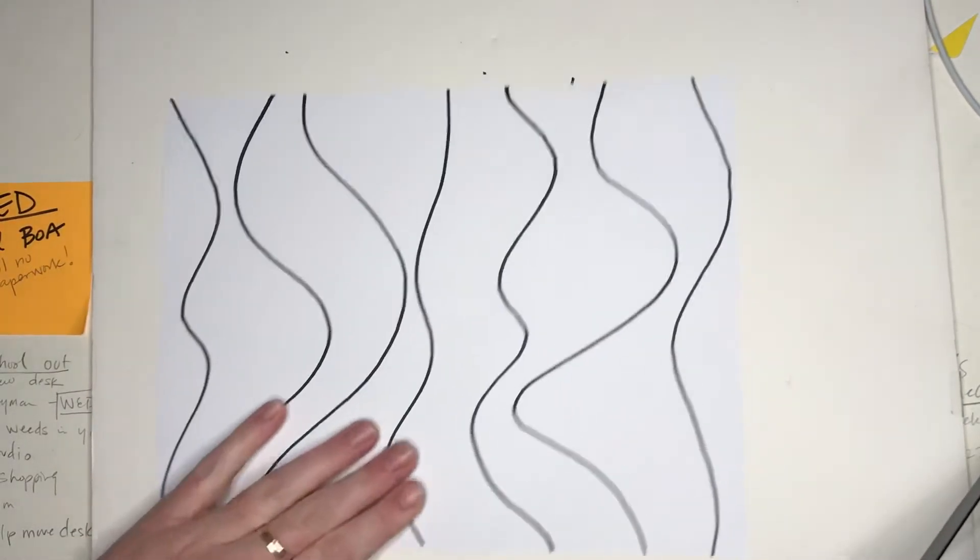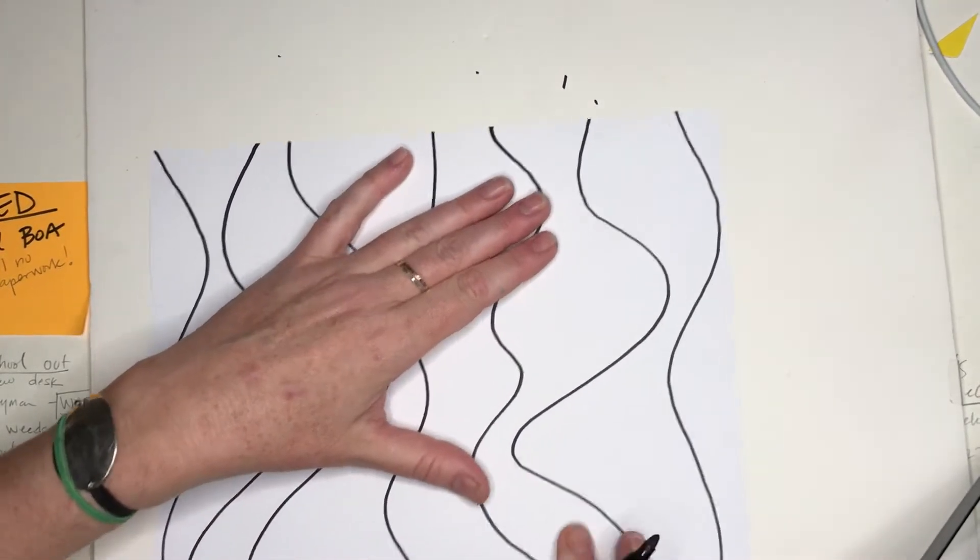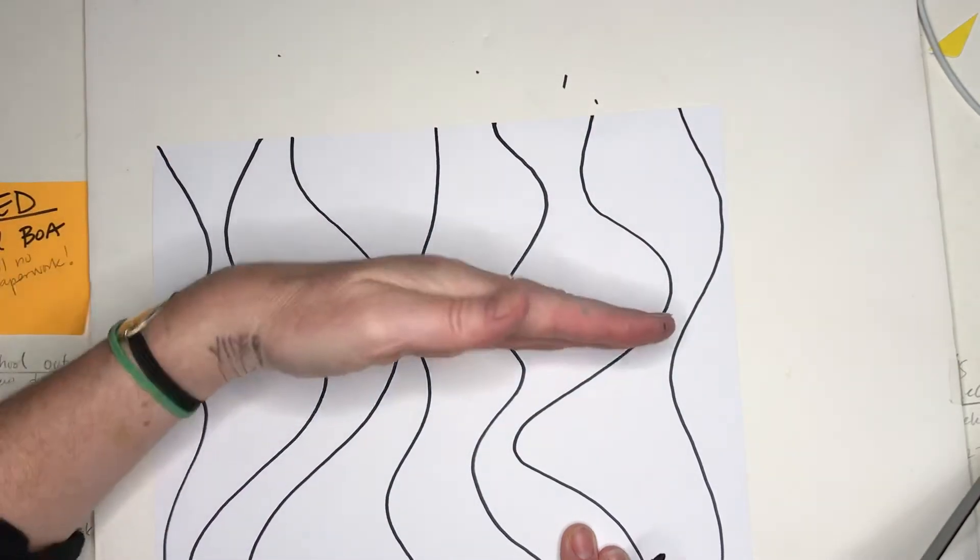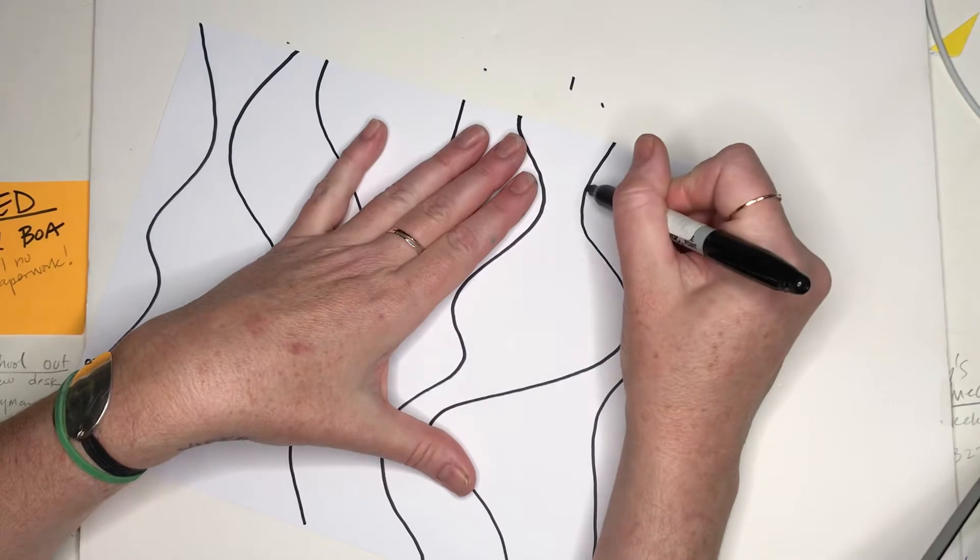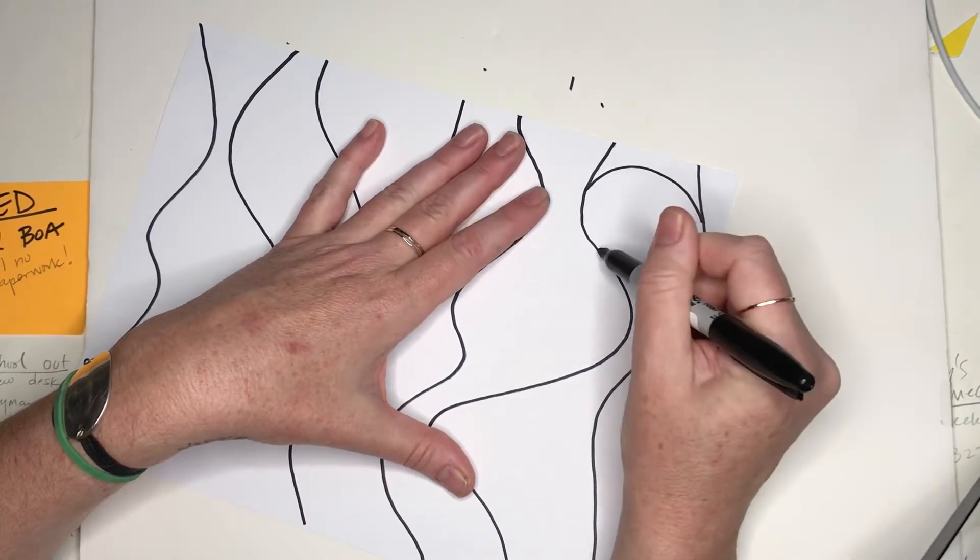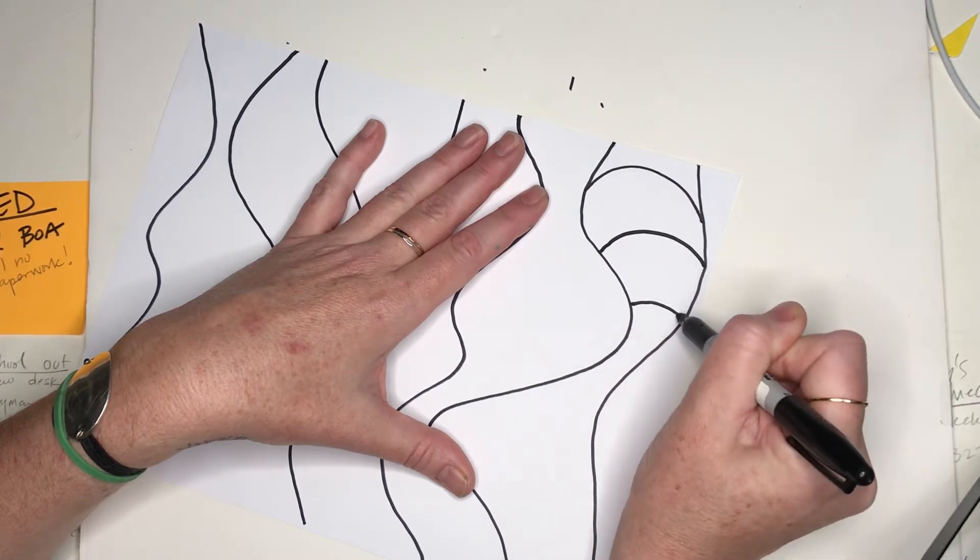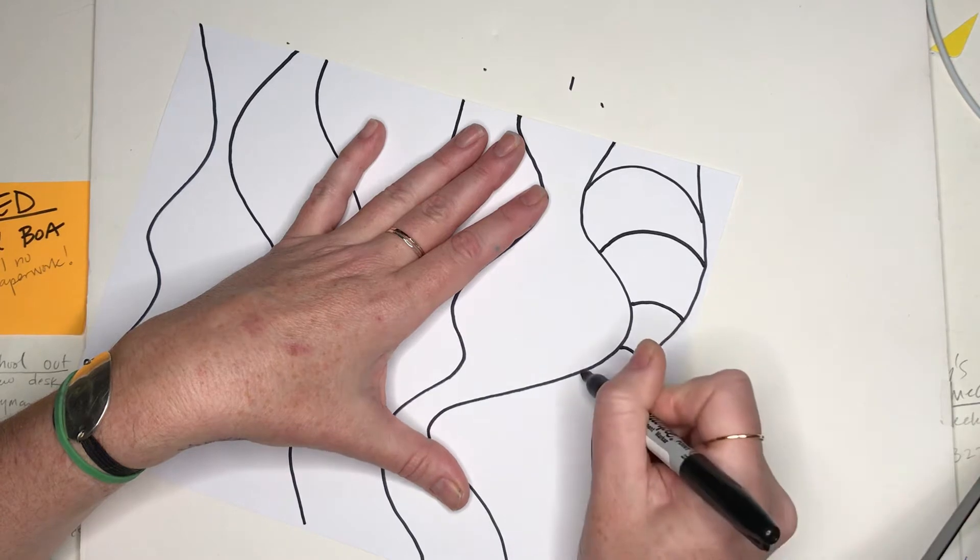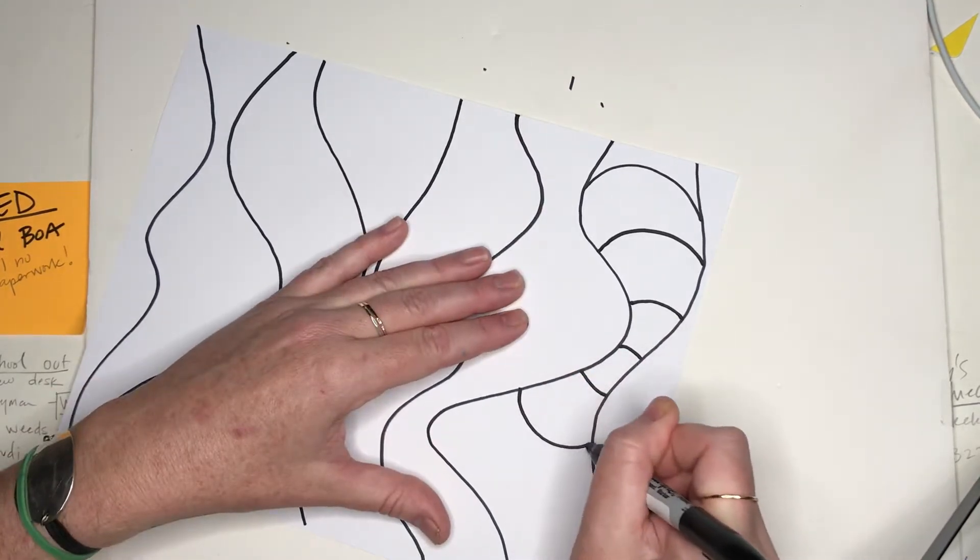Alright, so now what you want to do is you're going to start kind of dividing the space up. So think about, there's a middle part of your page, there's kind of upper and there's lower. In the upper part, the lines are going to go up like this. And as I get closer to the center, I'm going to get a little straighter, because what's going to happen is I'm going to change direction and now the lines are going to swoop down.